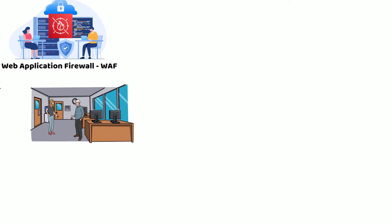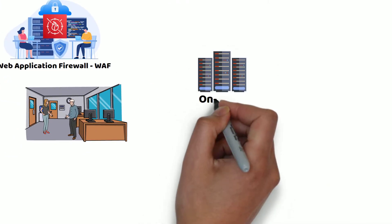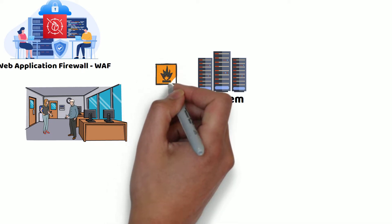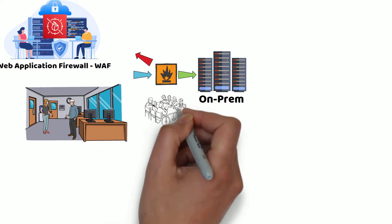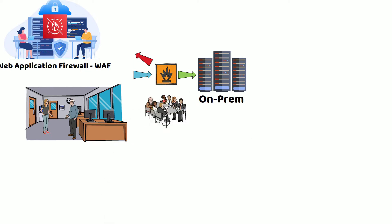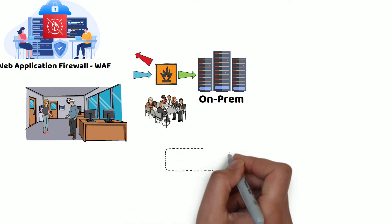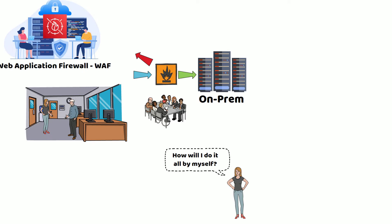Traditionally, infrastructure was secured by installing hardware firewalls at various layers and was managed by a group of security experts. Jennifer knows that securing infrastructure is not easy and usually involves security experts specialized in various security domains such as DDoS attacks, SQL injections, and other web exploits.